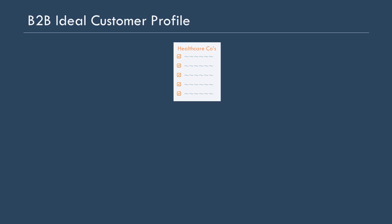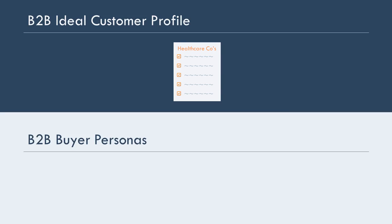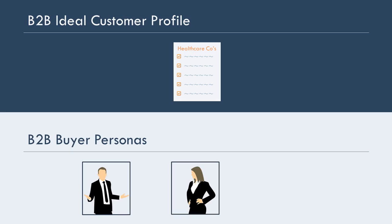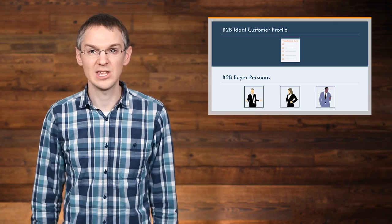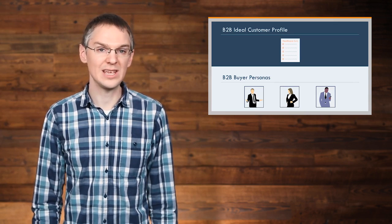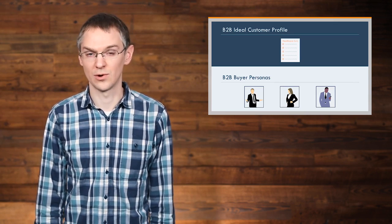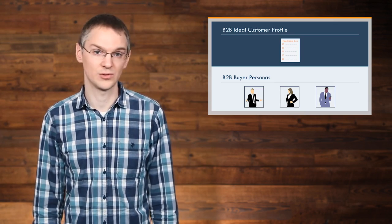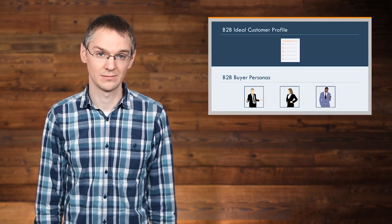Let's go back to the example of a recruiting agency that targets healthcare companies with less than 10,000 employees. If your agency specializes in recruiting salespeople, then you would likely be targeting the VP of sales, the director of recruiting, and the CEO at those healthcare companies. You would then have one persona for each of those three roles: VP of sales, director of recruiting, and CEO.